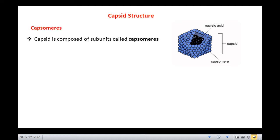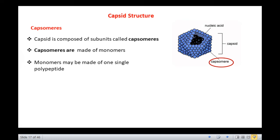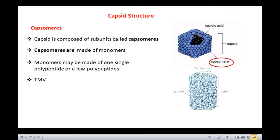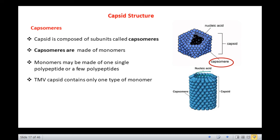The capsid is composed of subunits called capsomeres. The capsomeres are said to be made of monomers which again can be made of one single polypeptide or a few polypeptides. For example, TMV capsid contains only one type of monomer made of only a single polypeptide of 158 amino acids.